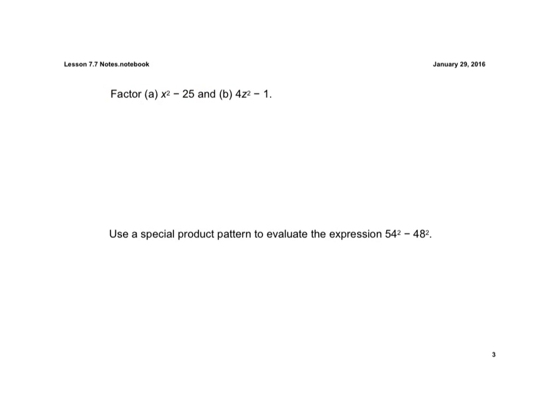So if we look at the examples here, we have x squared minus 25. Well, x squared is a perfect square, and 25 is a perfect square, so we could rewrite that as x squared minus 5 squared, and now we just have x minus 5 times x plus 5, and now we're done.